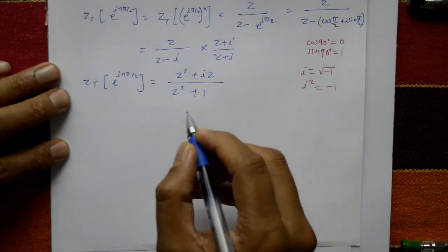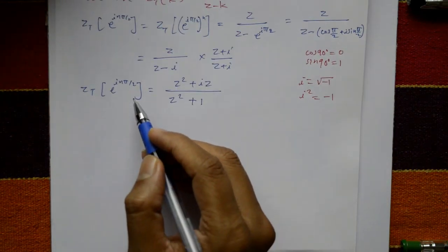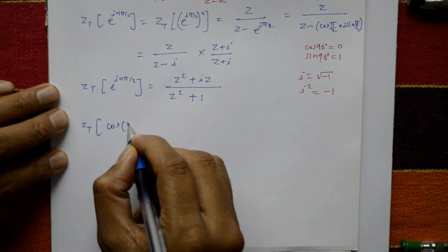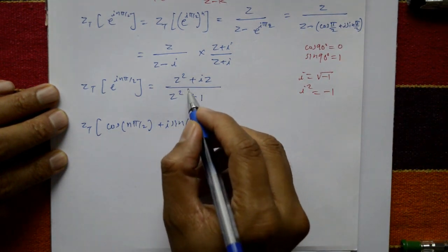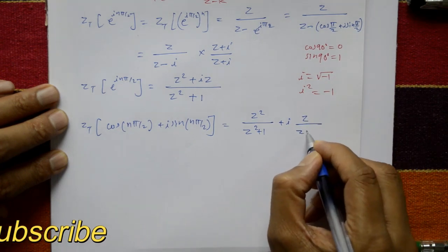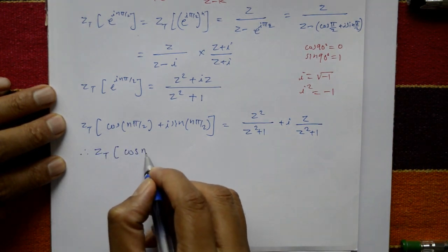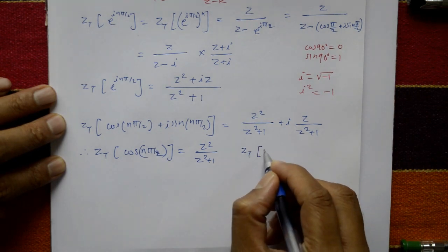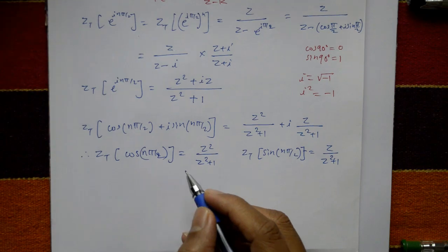Now separate the real and imaginary parts. The left-hand side Z{e^(inπ/2)} = Z{cos(nπ/2) + i sin(nπ/2)}, giving real part Z²/(Z² + 1) and imaginary part Z/(Z² + 1). Therefore, Z{cos(nπ/2)} = Z²/(Z² + 1) and Z{sin(nπ/2)} = Z/(Z² + 1).